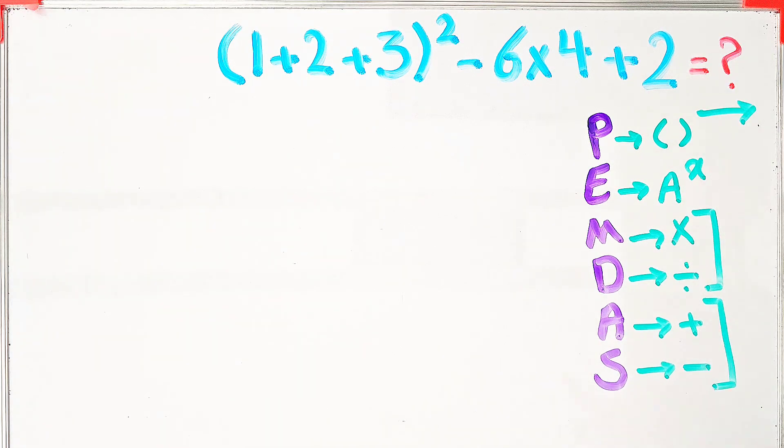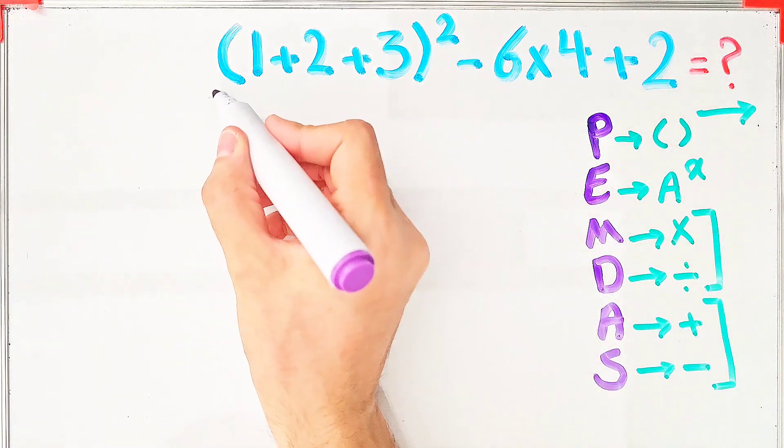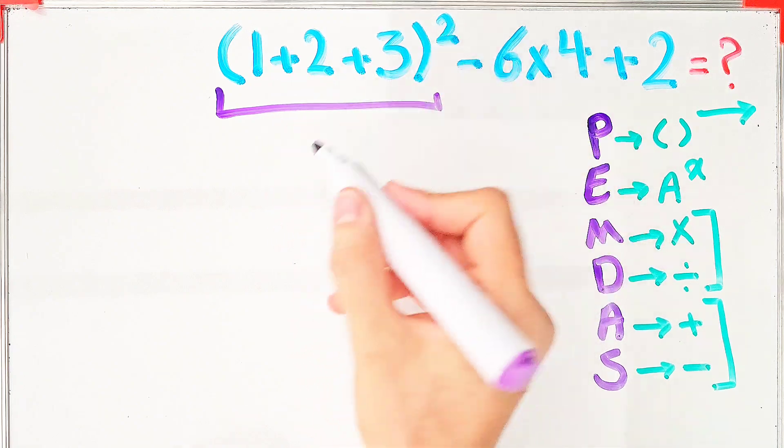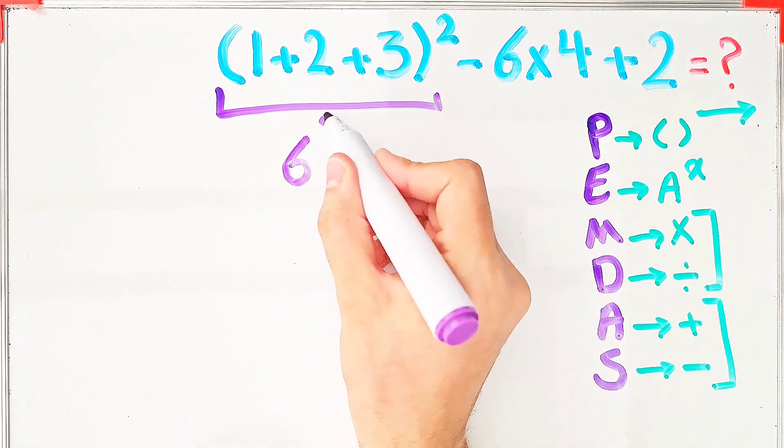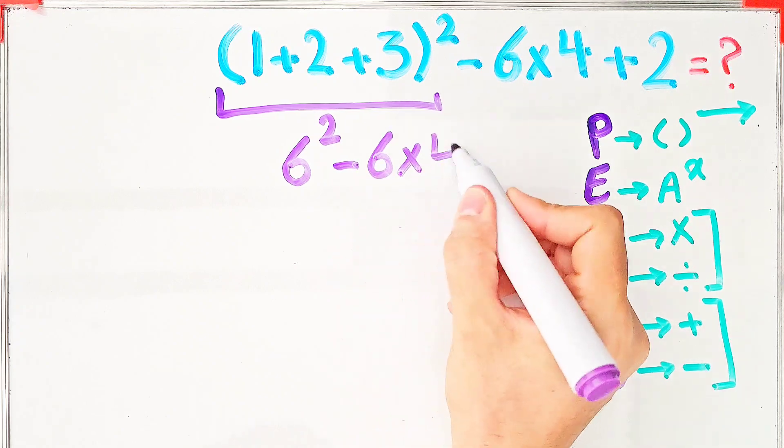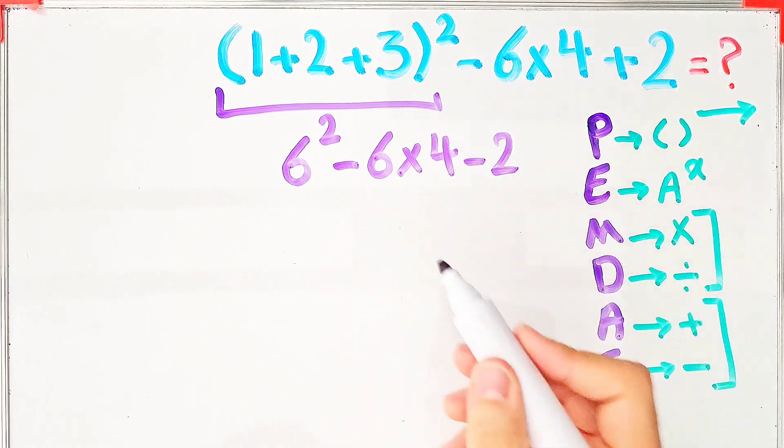According to the PEMDAS rule, first we simplify these parentheses. We have 1 + 2 + 3 that equals 6, then 6^2 - 6×4 + 2. In this step we simplify the exponent. We have 36 - 6×4 + 2.